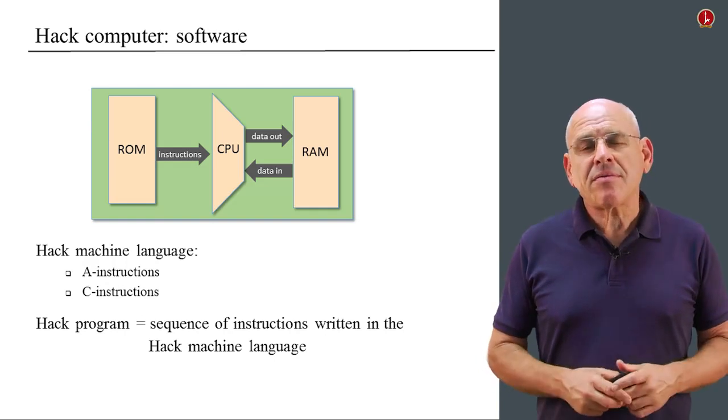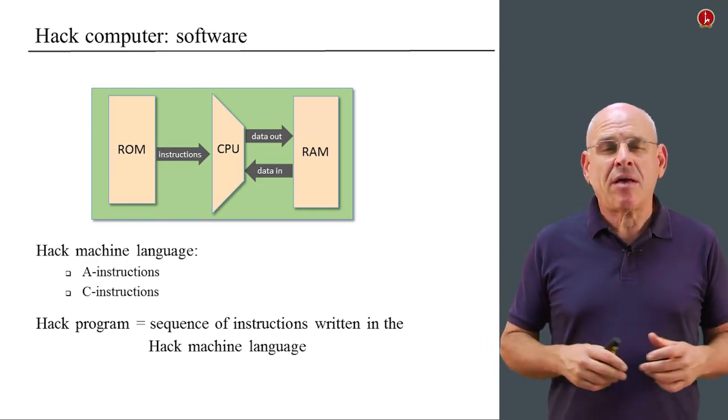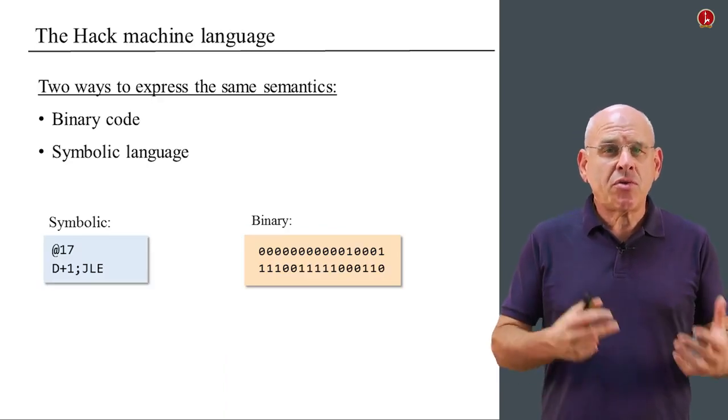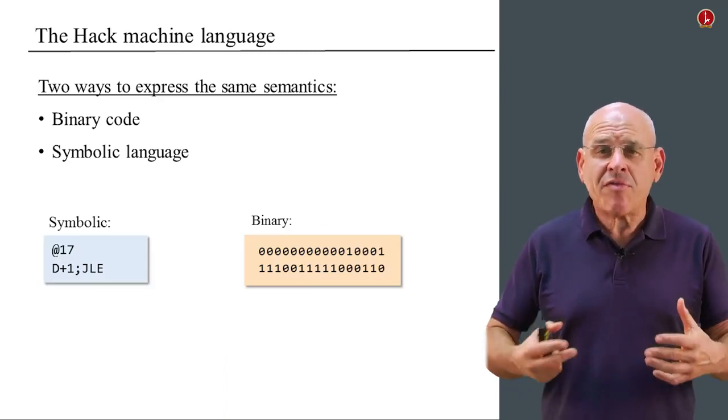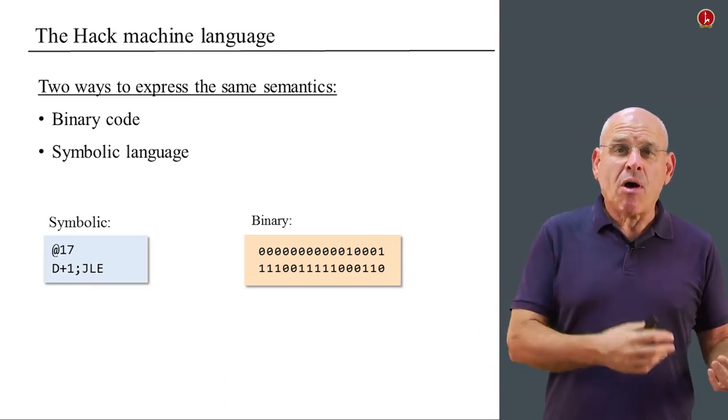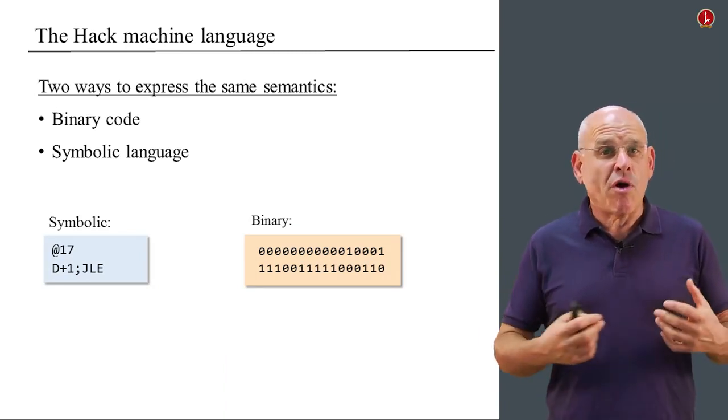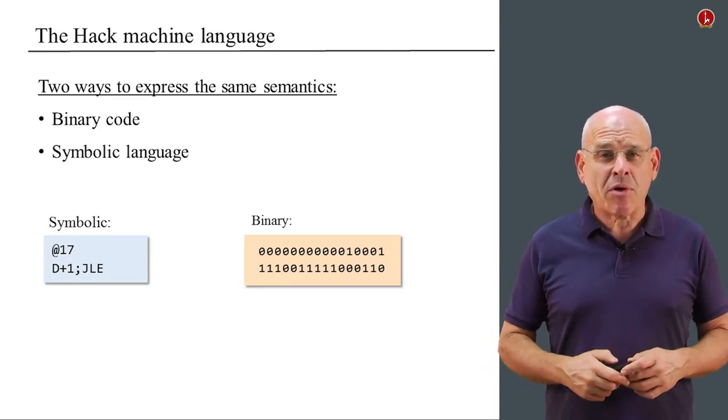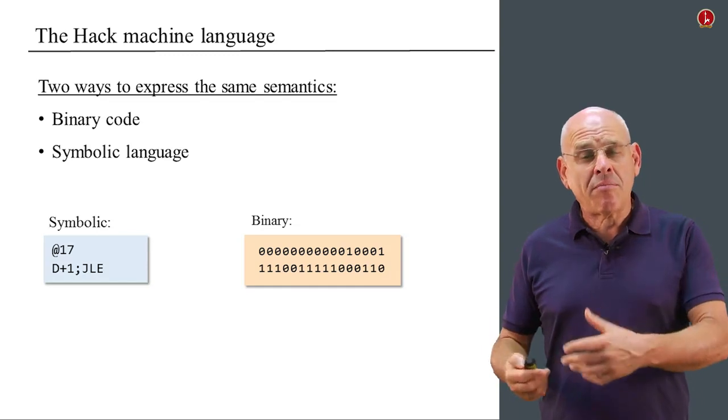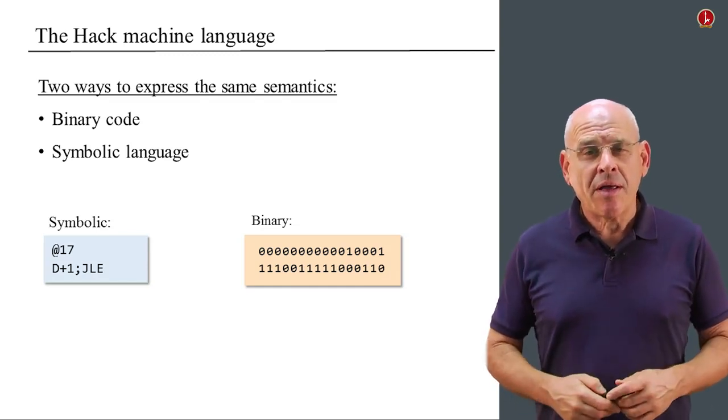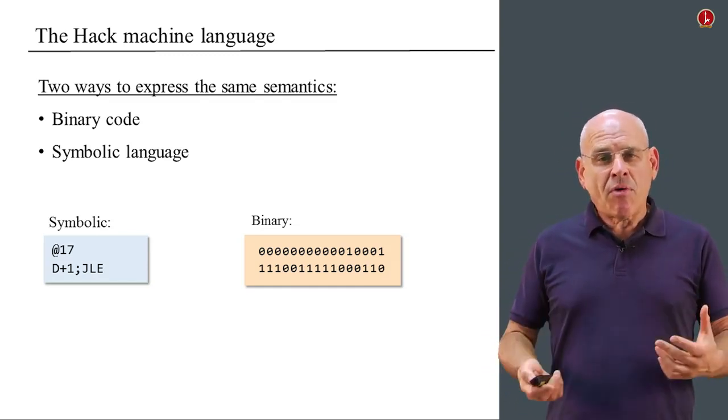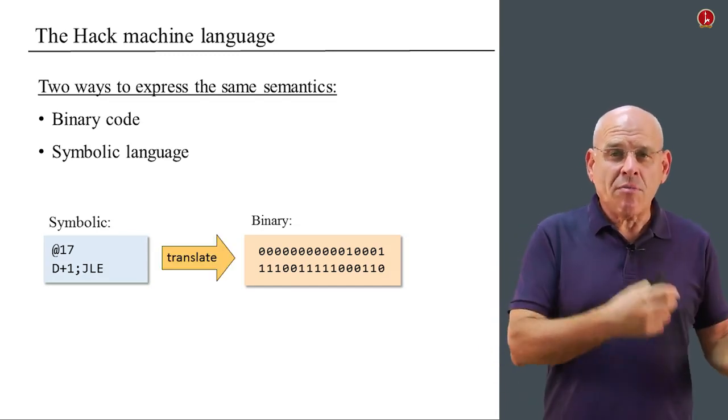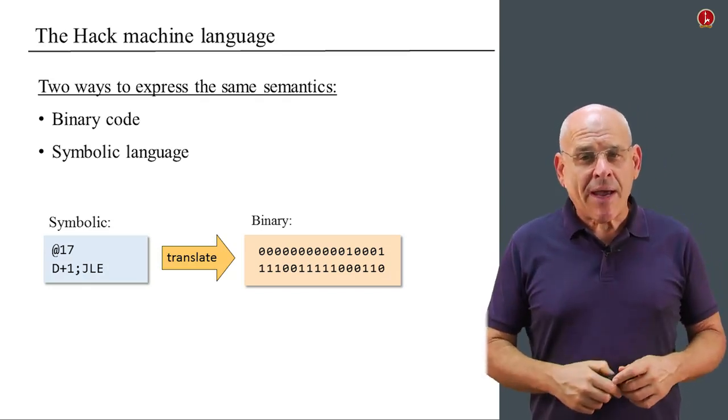Now, as it turns out, and this is true for every machine language out there, you can write programs in machine language using two different flavors or languages, if you will. You can write them symbolically using mnemonics and friendly symbols, and that's what we see here on the left-hand side at the bottom of the slide, or you can write them using agreed-upon binary codes. Now, if you write programs symbolically, you need someone to translate these programs from symbols to binary code.